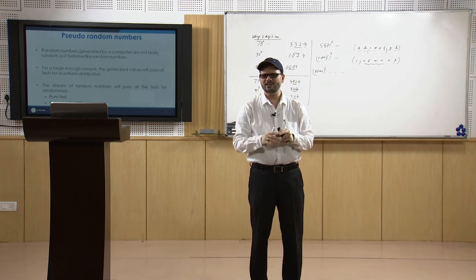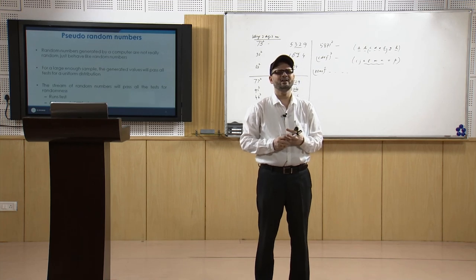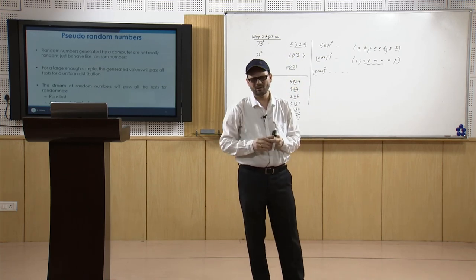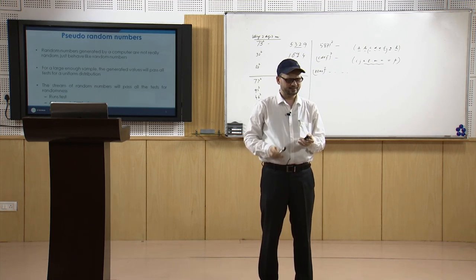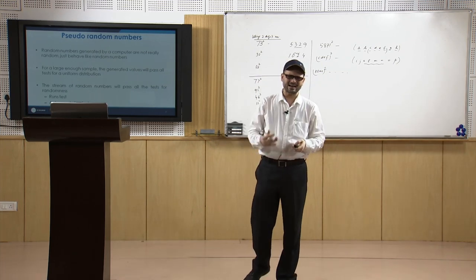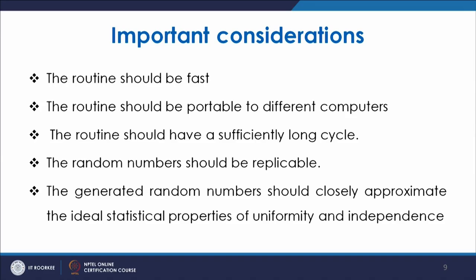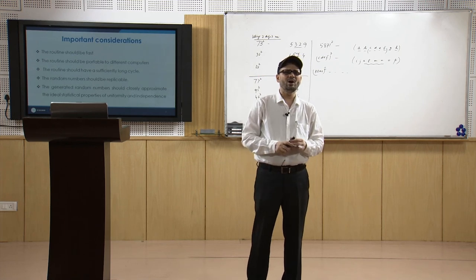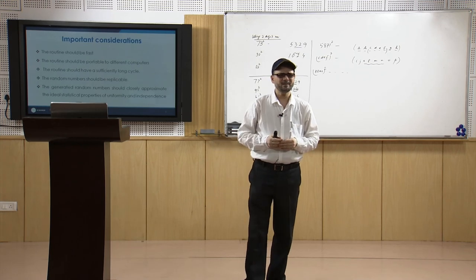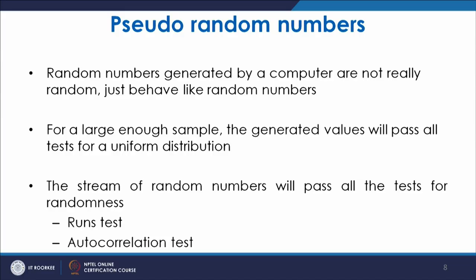We need equal probability for all generated random numbers within the range. There are two main tests: the uniformity test (also known as the frequency test), for which we use either the Kolmogorov-Smirnov test or the chi-square test; and the autocorrelation test, which checks the independence of the generated random numbers.